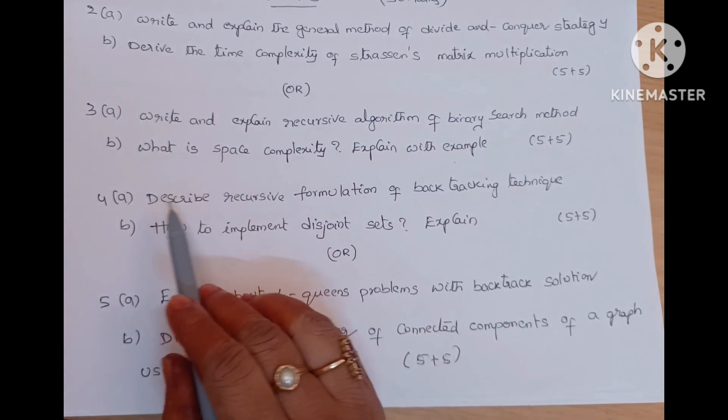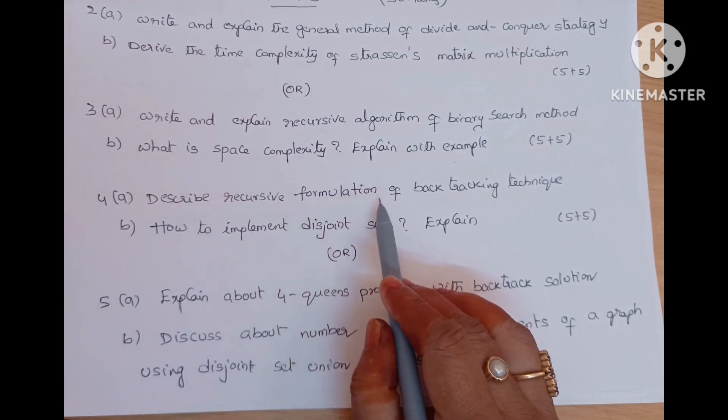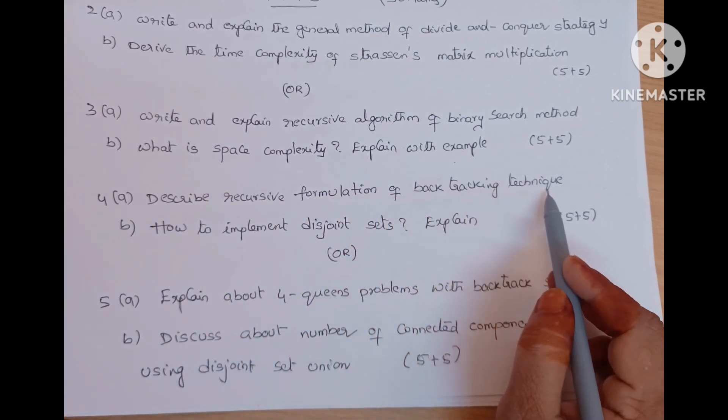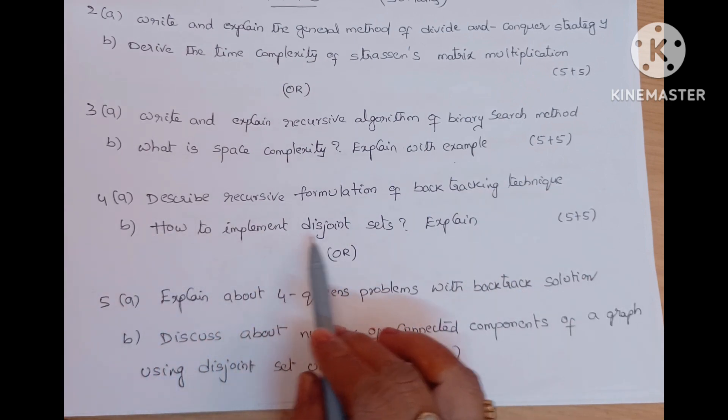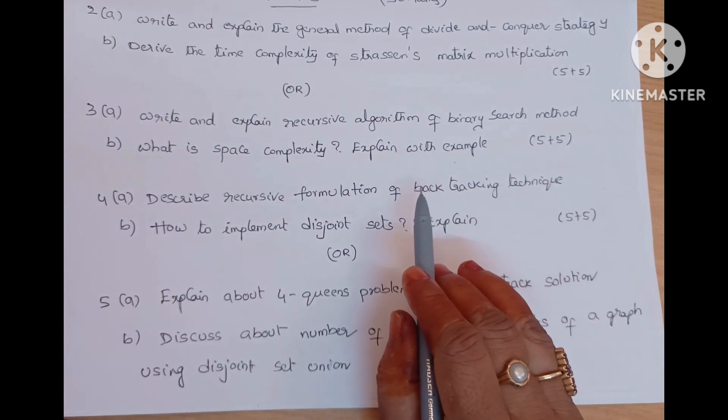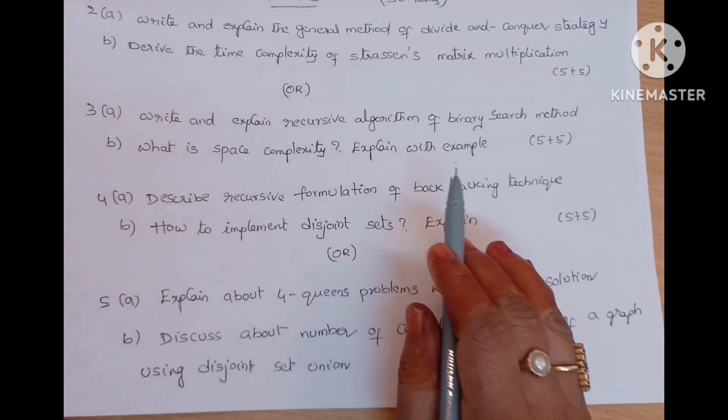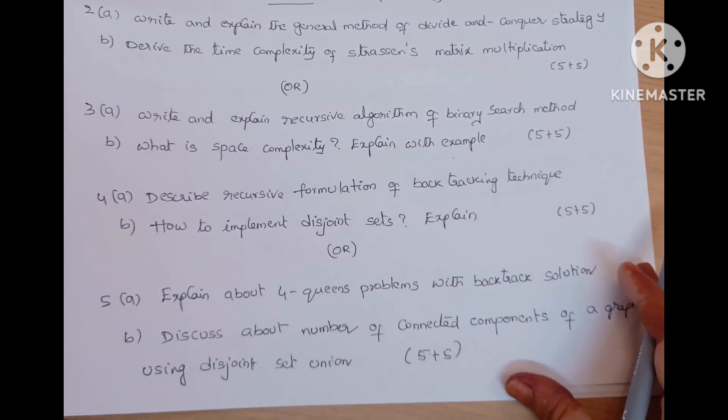Unit two questions are fourth A. Describe recursive formulation of backtracking technique, five marks question. B is how to implement disjoint sets explained, five marks. Already I posted the unit two unit wise notes. Check it once in my playlist. All the things, all the answers are available in that video.